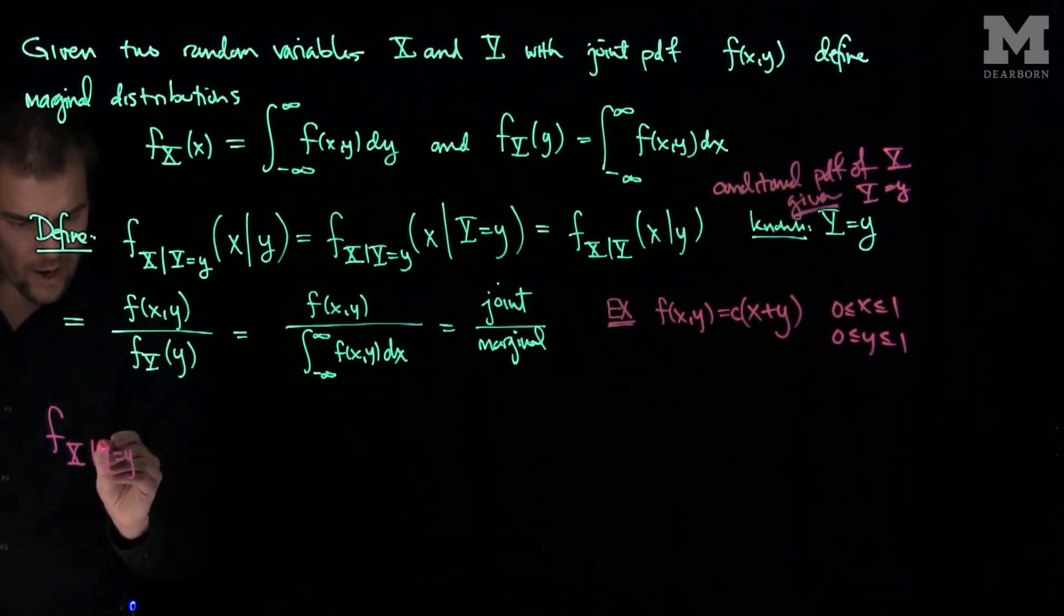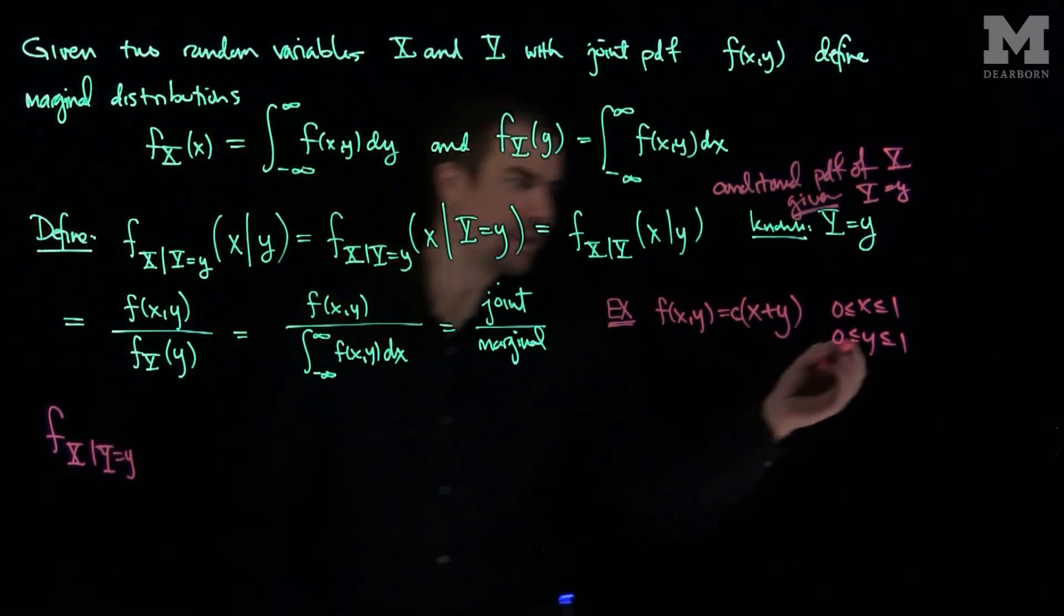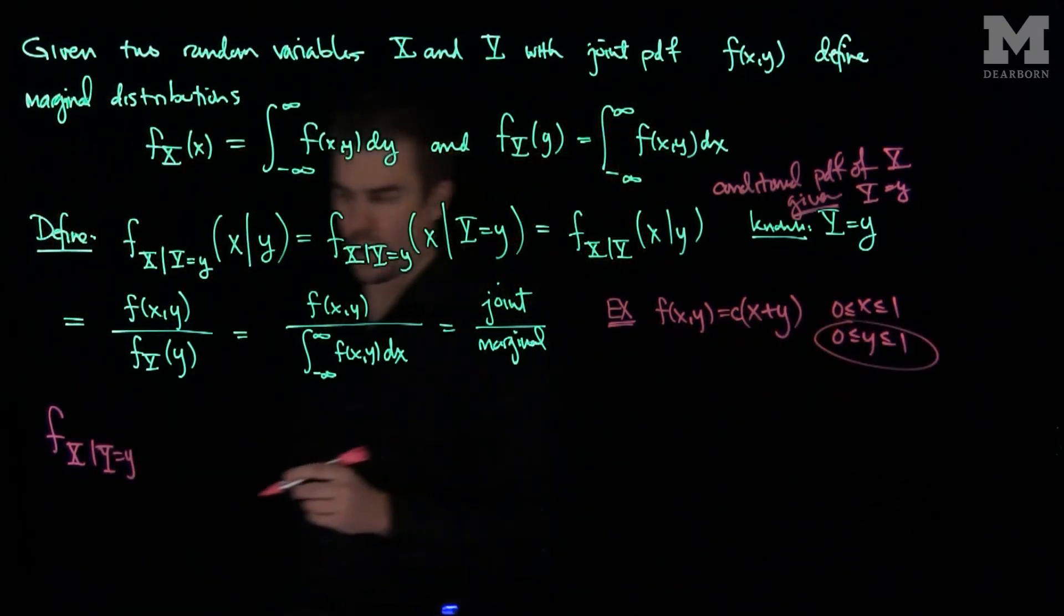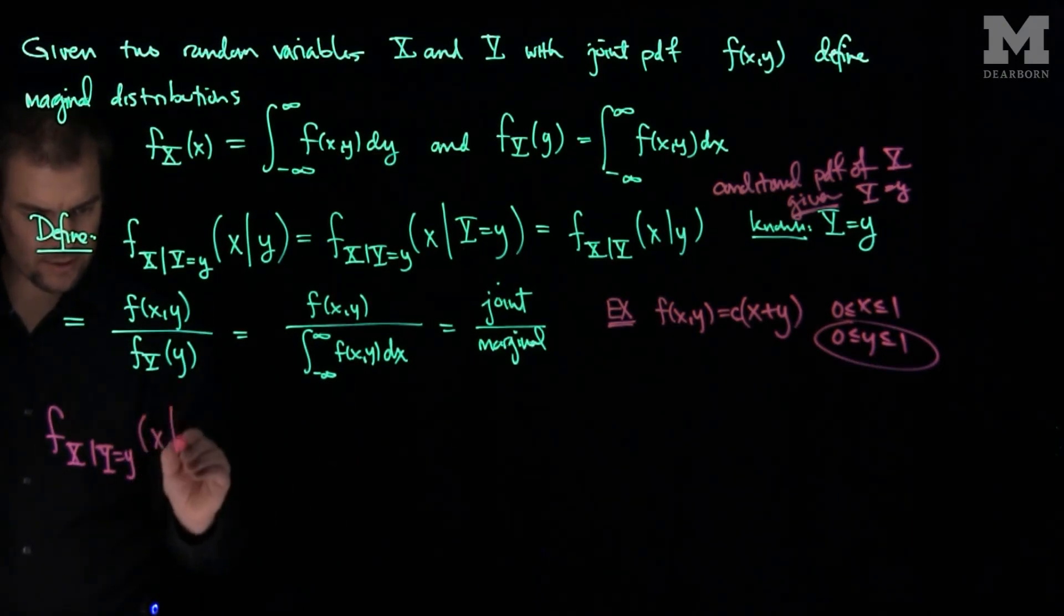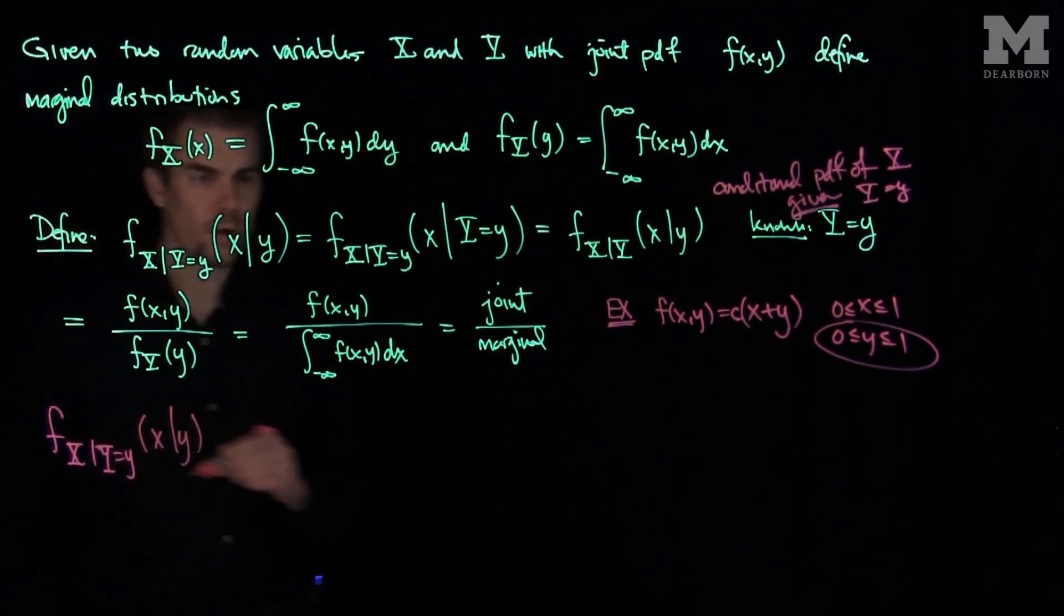Now, of course, Y equals y only makes sense if y is between 0 and 1. So let's use our notation. What will this be? f_{x|y}(x|y). Well,